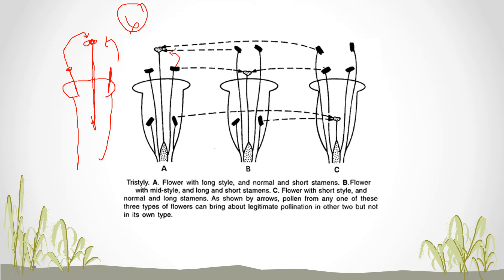But when you pair a flower with long stamen and short style together, the anthers can produce pollen grains which can directly come and sit over the long stigma. In this way fertilization can be very effective. Because of that mismatch in height it actually becomes compatible and effective.